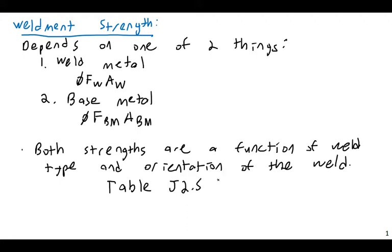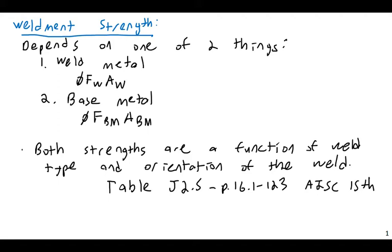In the AISC 15th edition, I encourage you to turn to Table J2.5. You'll see that depending on the type of weld, there is a whole variation in phi factors — the resistance factors. This table defines resistance factors for weld type and weld orientation.